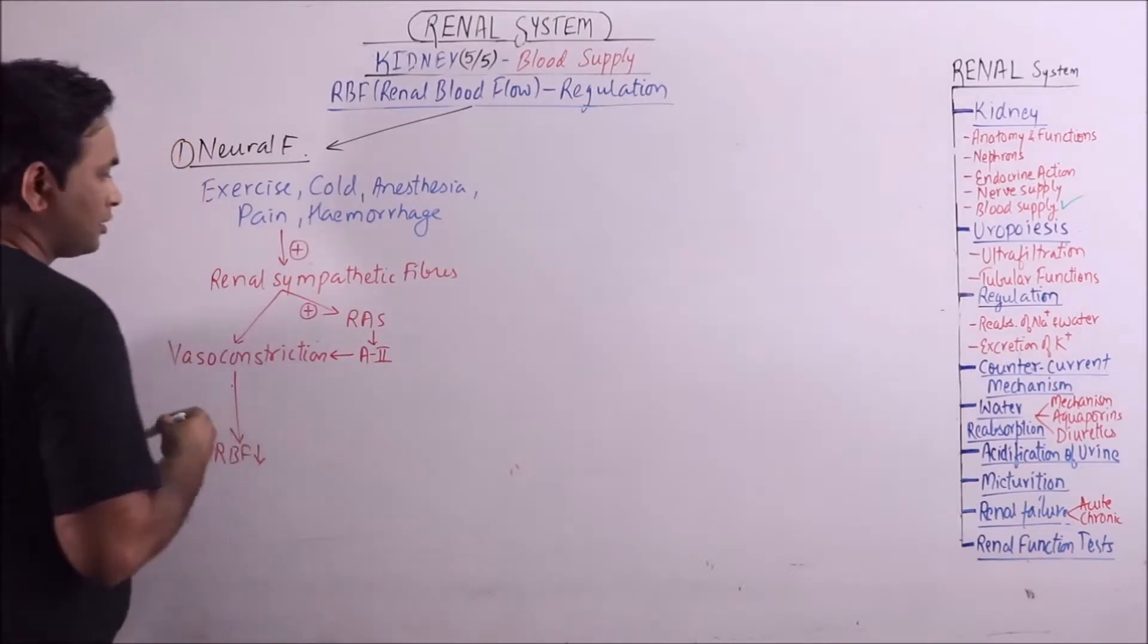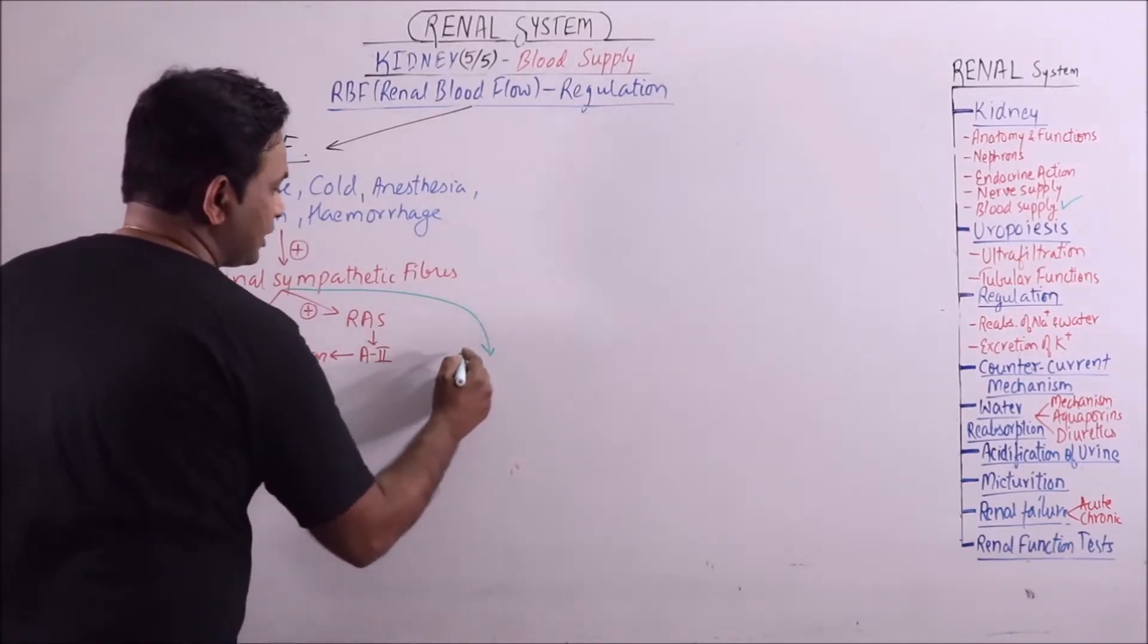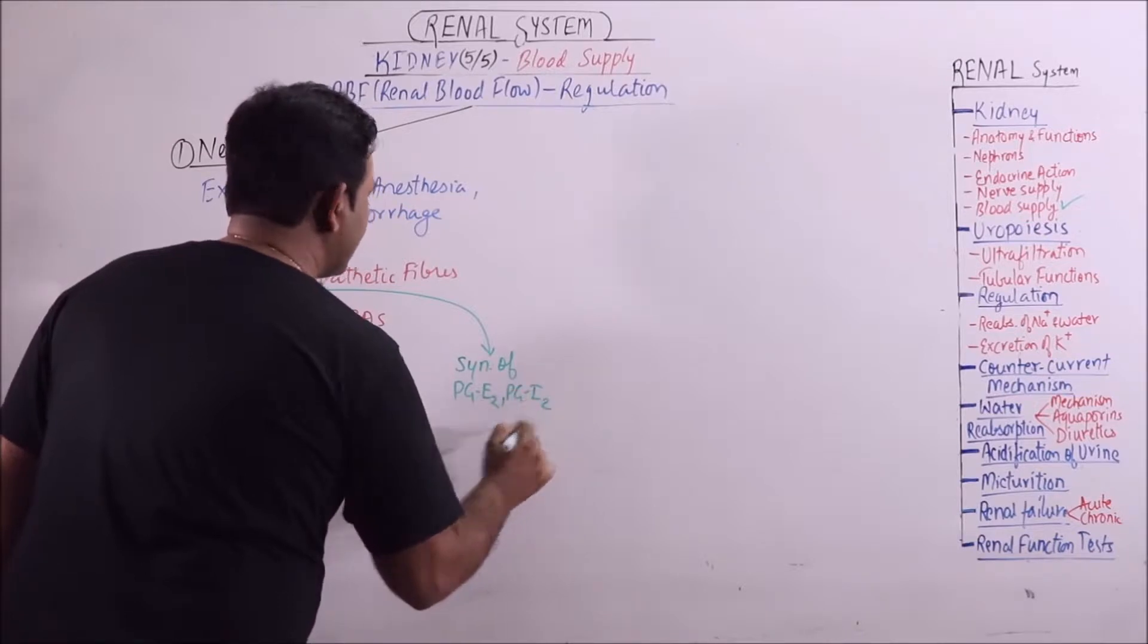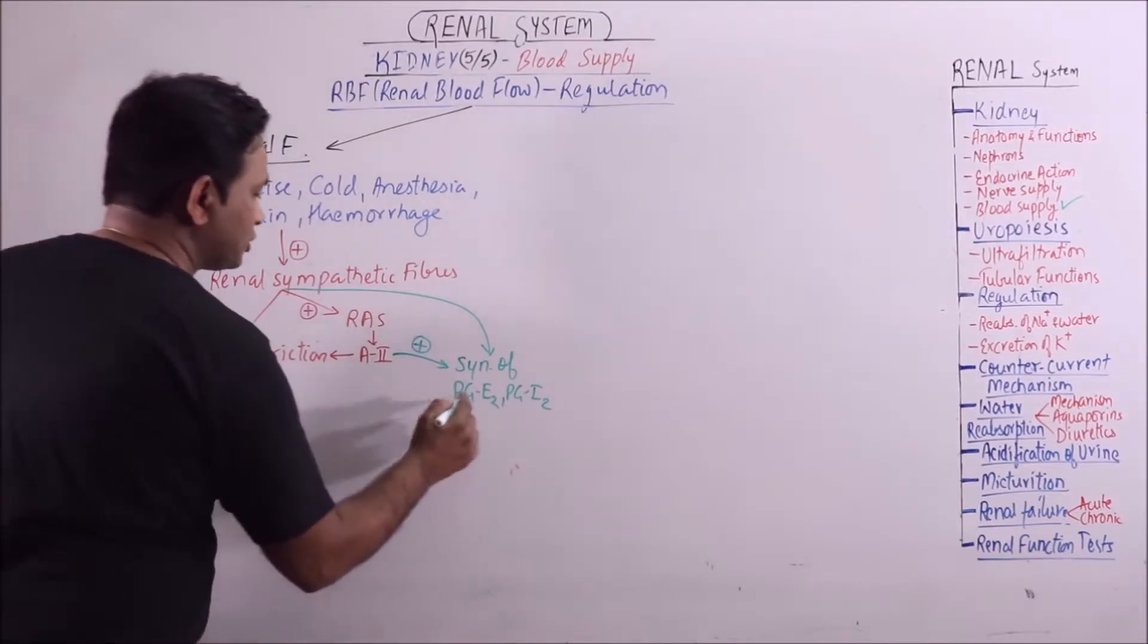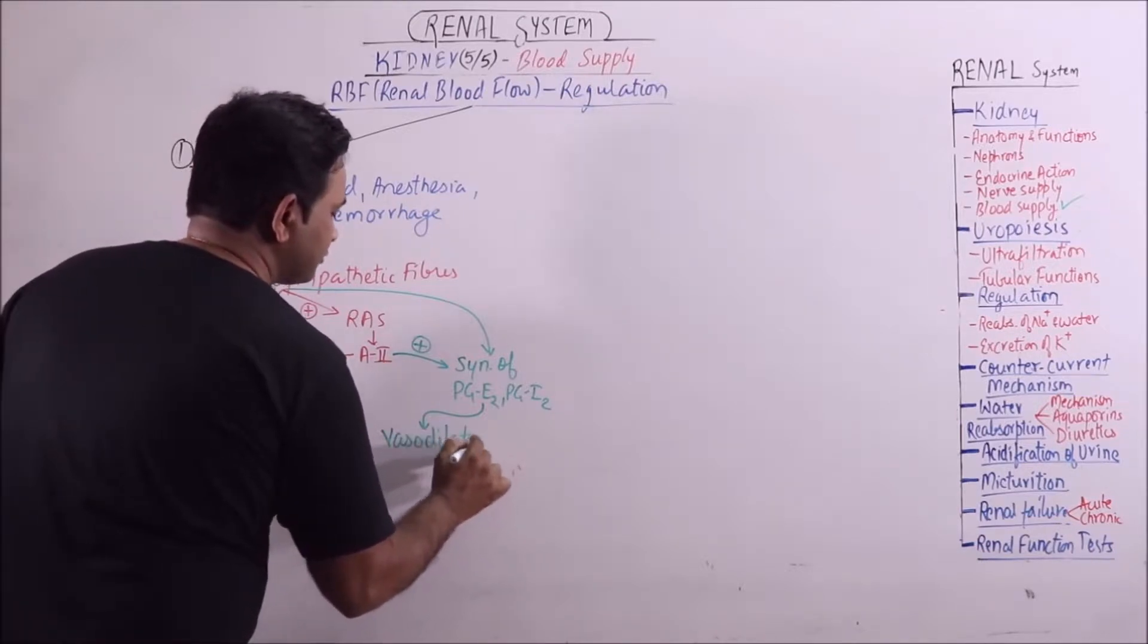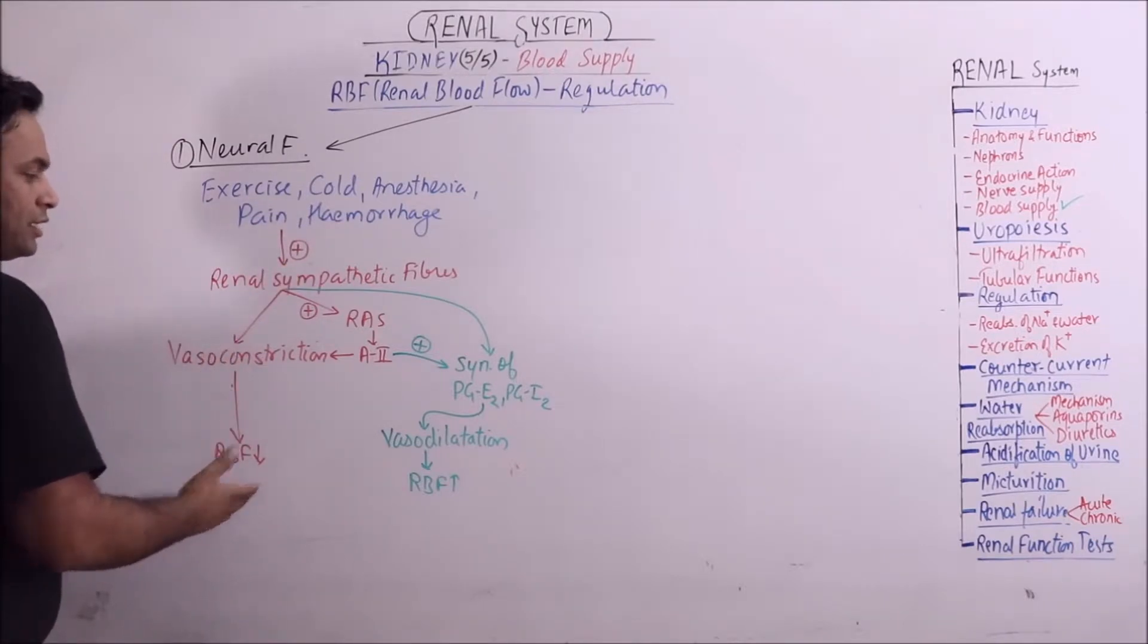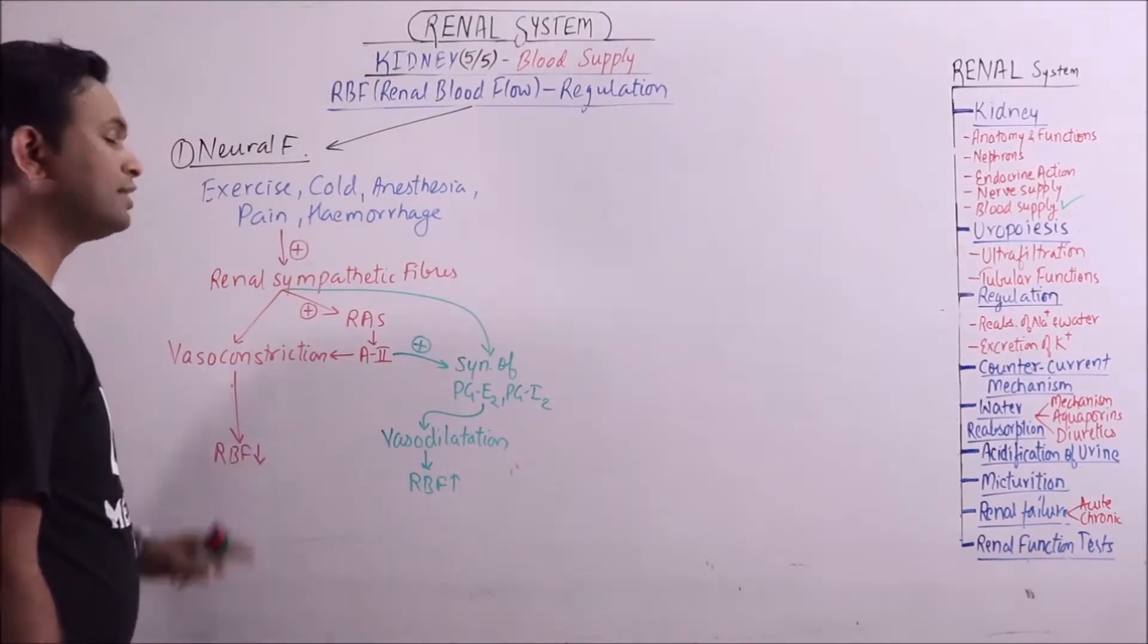But important thing is that the activation of sympathetic fibers also promote the synthesis of prostaglandin E2 and prostaglandin I2. Even angiotensin 2 also promotes the synthesis of these prostaglandins. These result in vasodilation and finally resulting in increase in RBF. So on one side RBF is decreasing, on another side RBF is increasing.